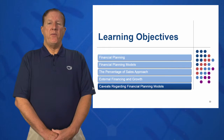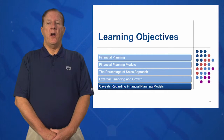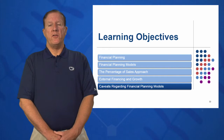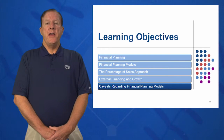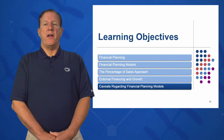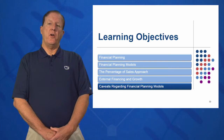In learning objective number five, we're going to look at some caveats regarding financial planning models — what causes growth, and what are some caveats surrounding these financial planning models that we're doing?